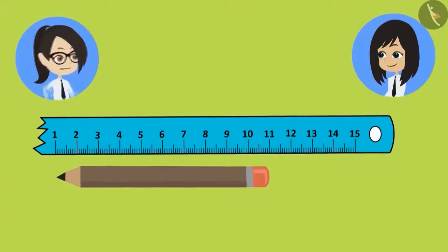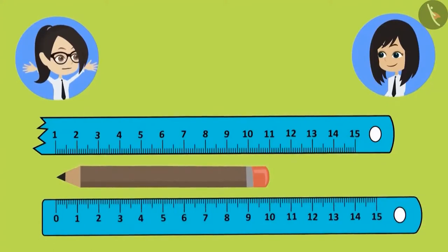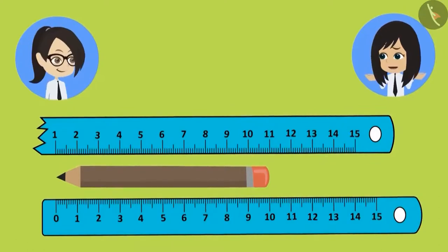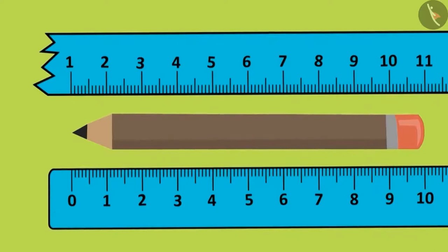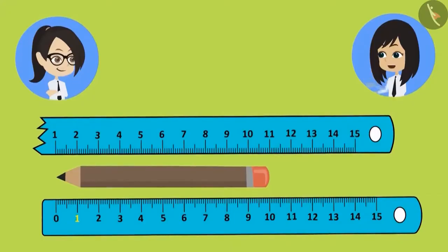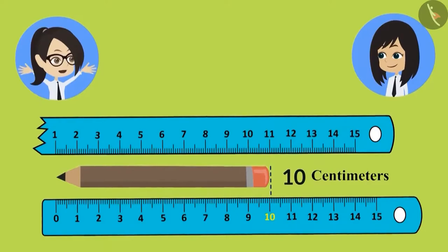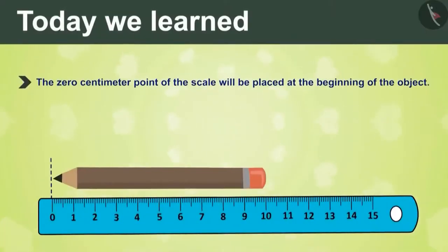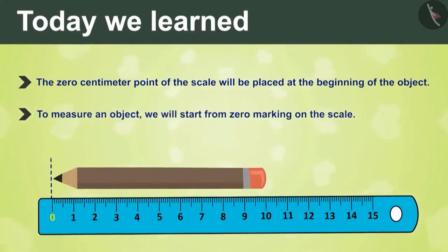Let's try to measure this pencil with the correct scale to find our mistake. The correct scale has a 0 written at the starting point, while with the broken scale we were starting from 1. This means whenever we measure using a broken scale, we must still start from 0. Let's measure now: 0, 1, 2, 3, 4, 5, 6, 7, 8, 9, and 10. 10 centimeters — now the measurement is correct. We need to remember two rules: the 0 centimeter point of the scale must be placed at the beginning of the object, and we always start counting from the 0 marking on the scale.